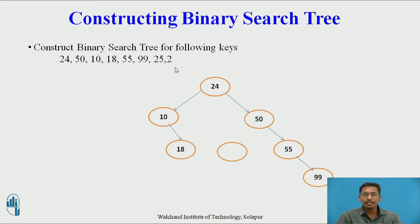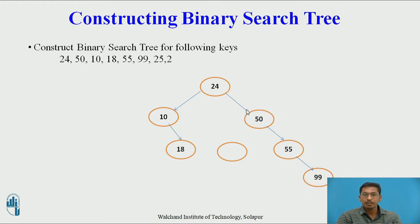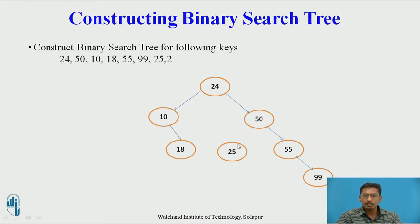Next node is 25. Starting from root: 25 is greater than 24, so 25 should be on the right subtree of 24. We compare 25 with 50 — 25 is less than 50, so 25 should be present on the left subtree of 50. This is the correct position of 25.